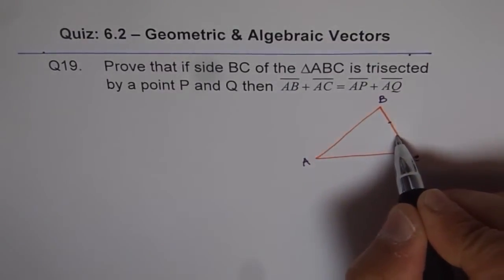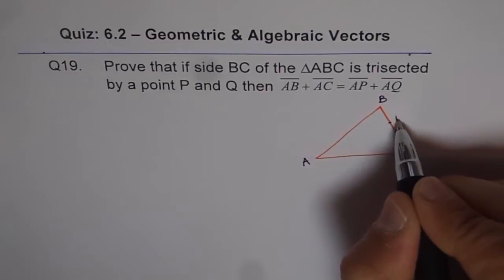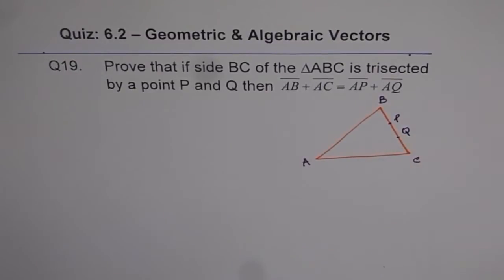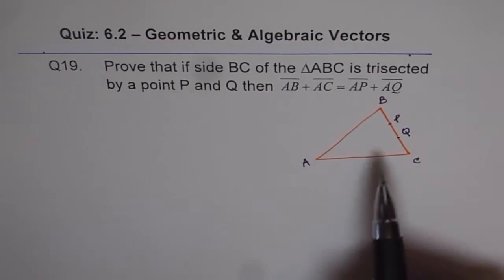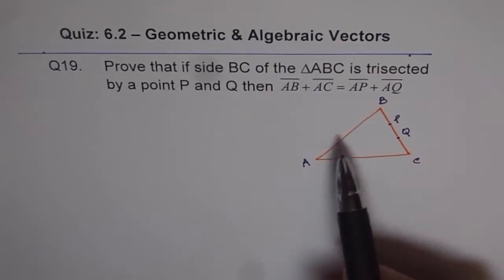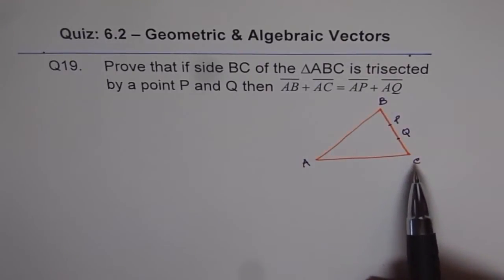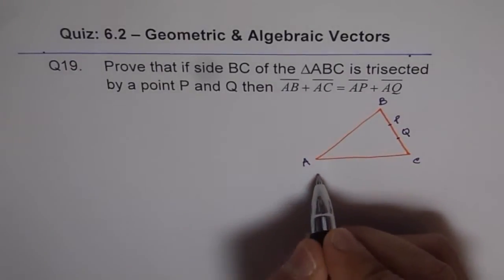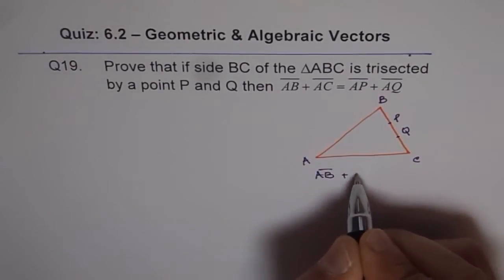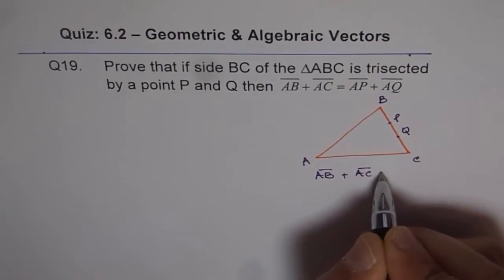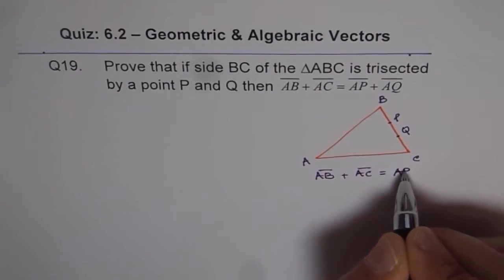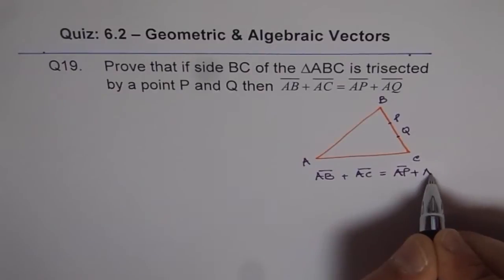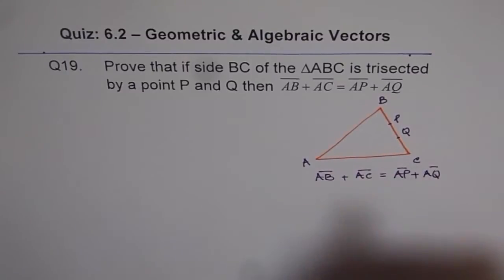That means we have two points here and these two points are P and Q. So prove that if the side BC of triangle ABC is trisected by the points P and Q, then we need to prove that AB + AC equals AP + AQ. This is what we need to prove.